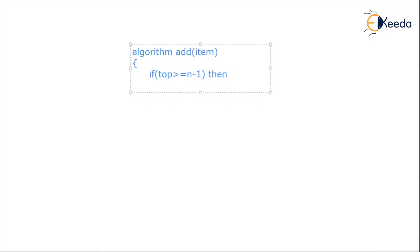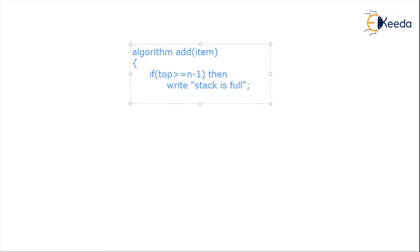Our first condition is to check if the stack is empty or full. If the stack is full, we share a message that we cannot enter any more items. We check this by seeing if top equals n-1, since the index goes from 0 to n-1 for n elements. If top is greater than or equal to n-1, the stack is full and we return false, indicating that the addition was unsuccessful.